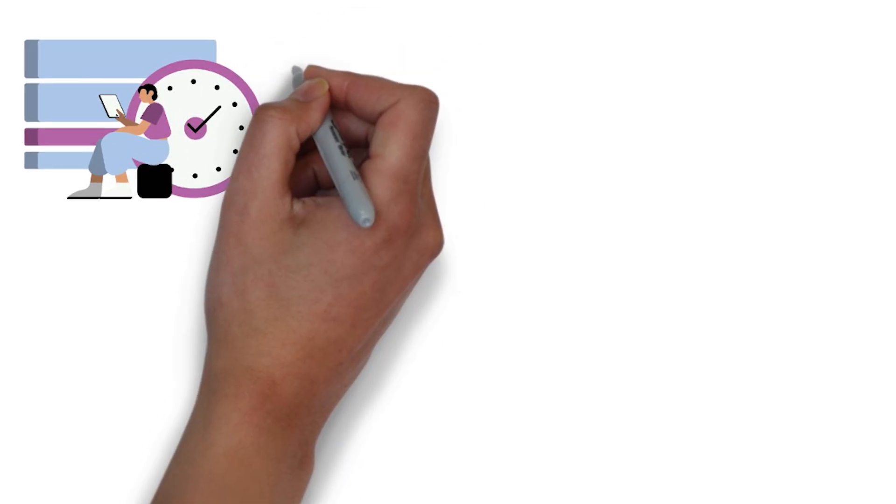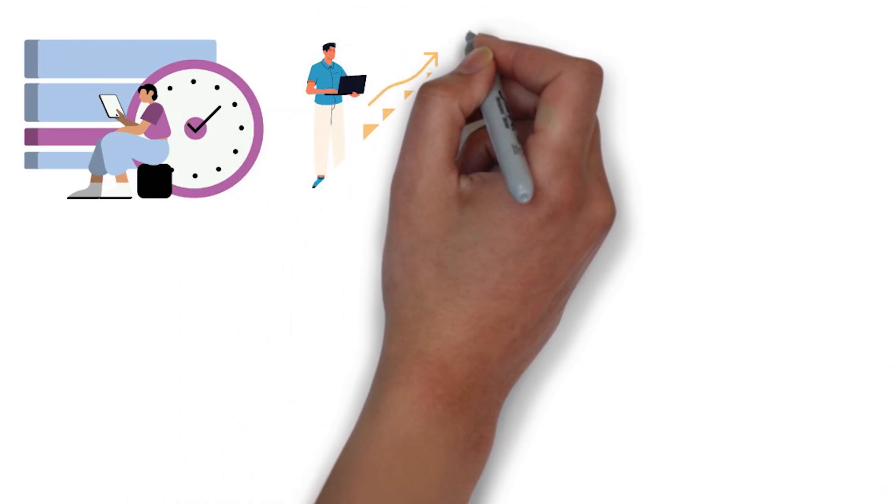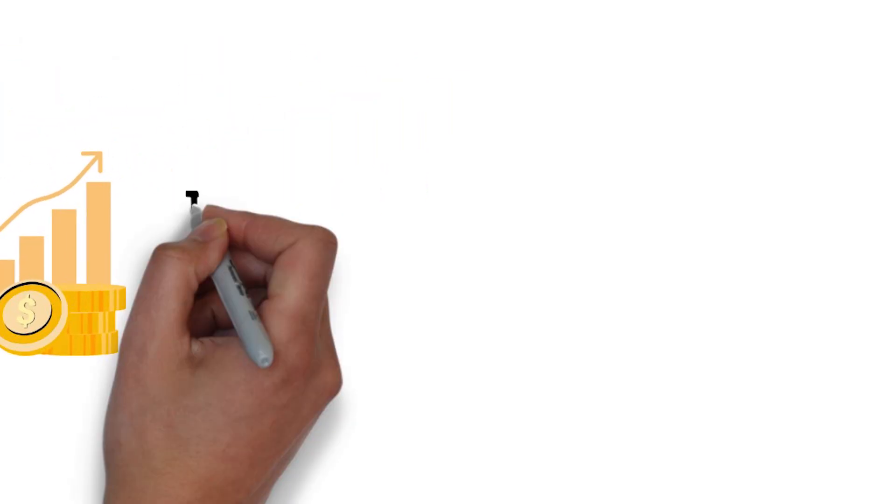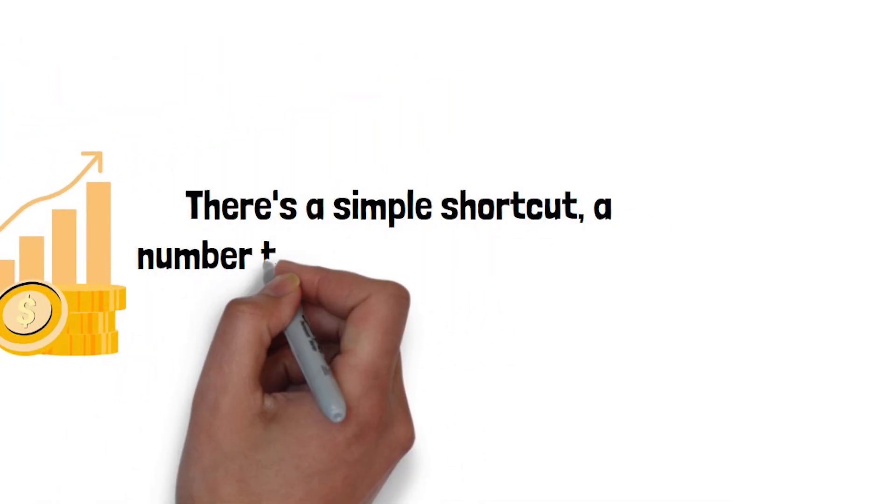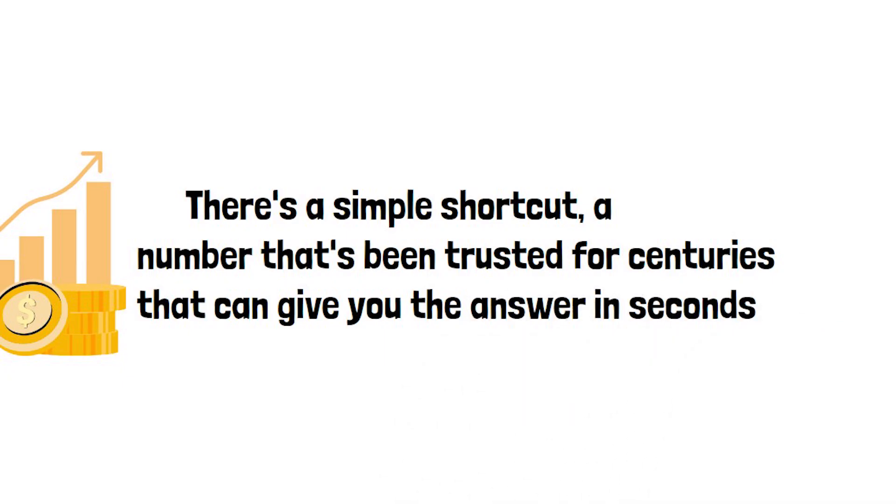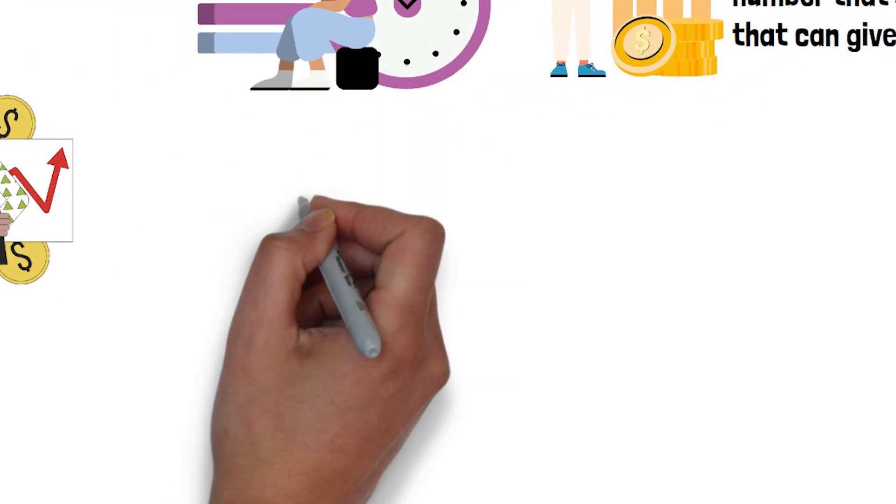So, how do you quickly figure out if your money is truly compounding fast enough to build real wealth? There's a simple shortcut, a number that's been trusted for centuries, that can give you the answer in seconds. It's called the Rule of 72.